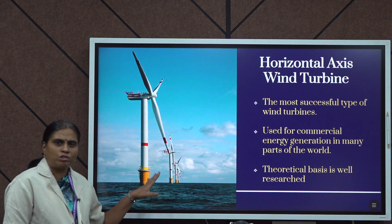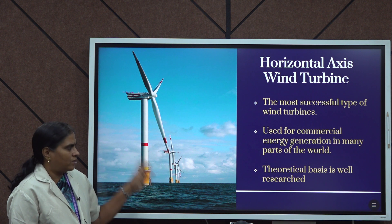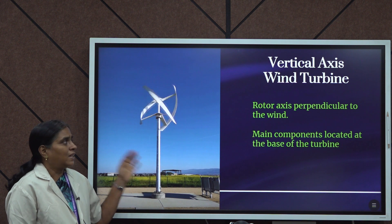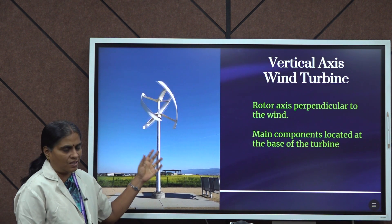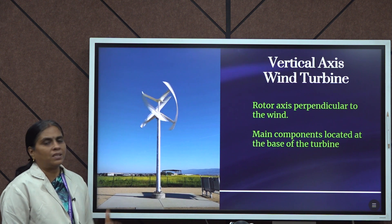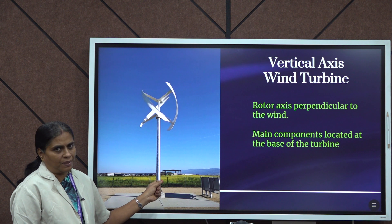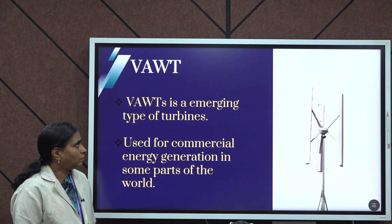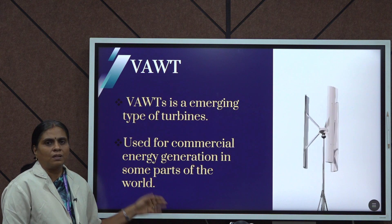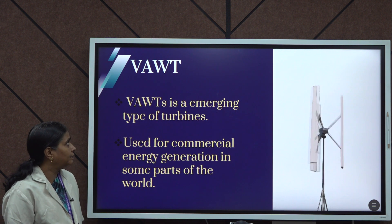Horizontal axis wind turbines are the most successful types of wind turbines, used worldwide for energy generation, and are well researched with a solid theoretical basis. The next type is the vertical axis wind turbine. In this type, the blade location is different — the rotor axis is perpendicular to the wind, and the main components are all located at the base of the turbine. Vertical axis wind turbines are an emerging type, used for commercial purposes in some parts of the world.